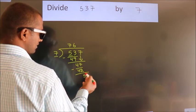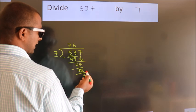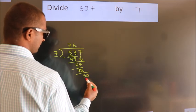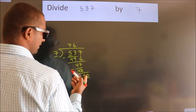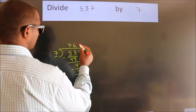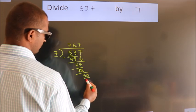After this, no more numbers to bring down. So what we do is, we put dot, take 0. So 50. A number close to 50 in 7 table is 7 times 7 equals 49.